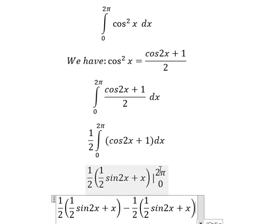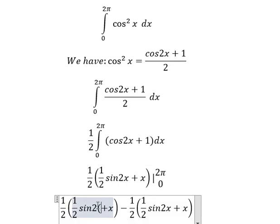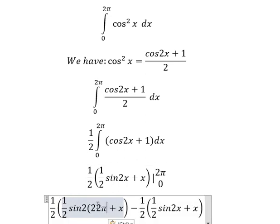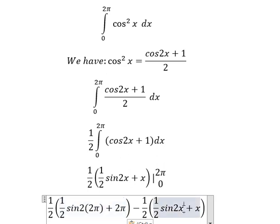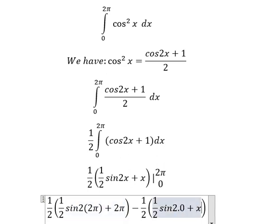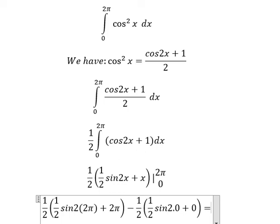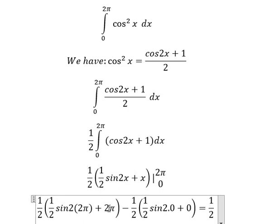We substitute 2π for the upper bound and 0 for the lower bound. When we evaluate, sin(4π) = 0 and sin(0) = 0, so we just have (1/2) multiplied by 2π.